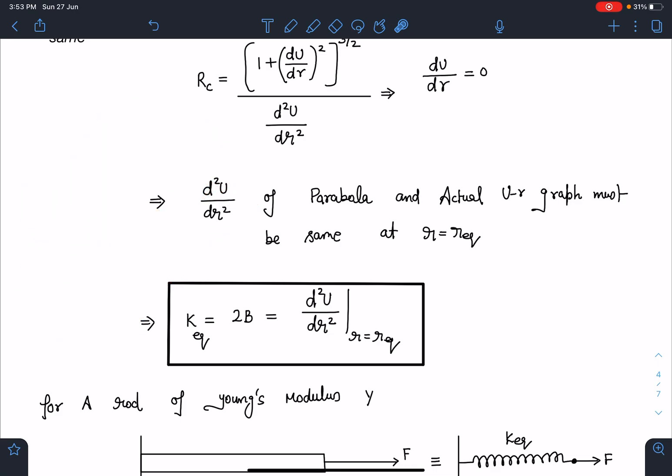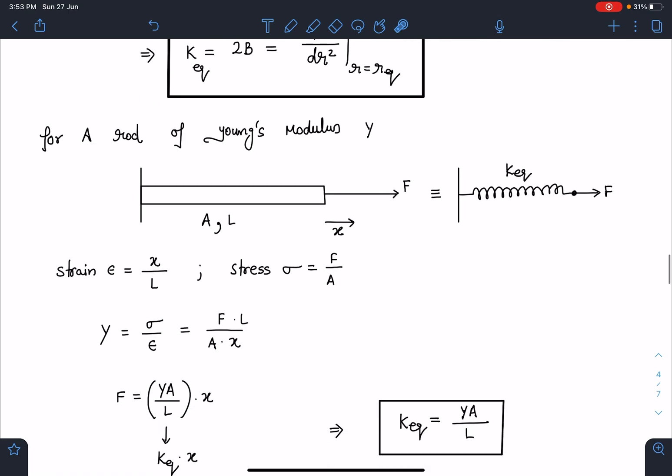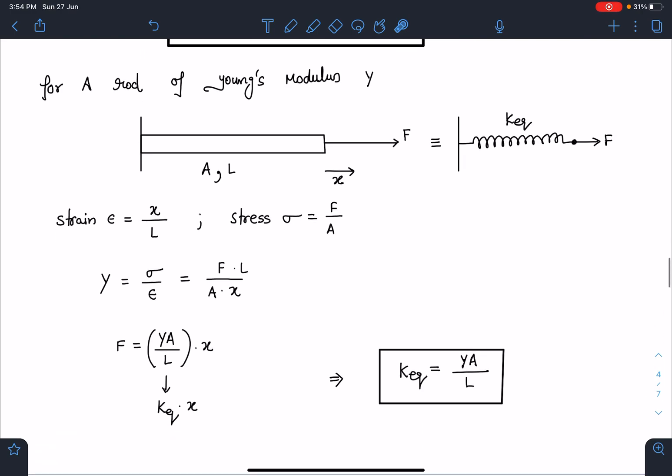Similarly, for a rod of Young's modulus Y, if we are giving a displacement of x and we are converting this into a spring of k_eq, when on application of force this rod is displaced by a distance x, I can write strain as x/L and the corresponding stress as F/A. Young's modulus in this situation will be stress/strain. From here I am getting F = (YA/L)x. This is resembling the spring force expression F = kx, so this k_equivalent here I can write for a rod as YA/L. This result is very helpful for fast solving.